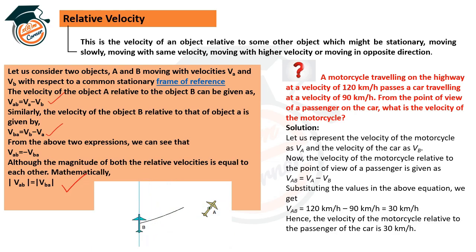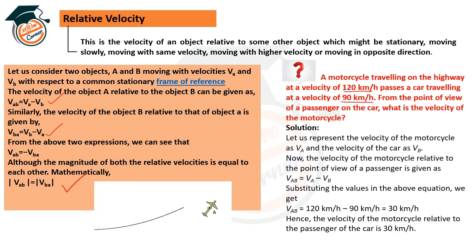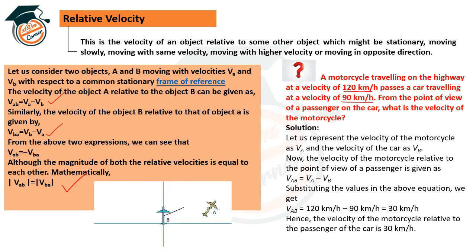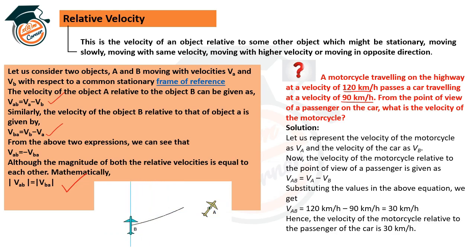Example: A motorcycle travels on a highway at 120 km/h and passes a car at 90 km/h. What is the velocity of the motorcycle relative to the passenger of the car? Using vAB = vA − vB: 120 − 90 = 30 km/h. From the point of view of the car's passenger, the relative velocity is 30 km/h.